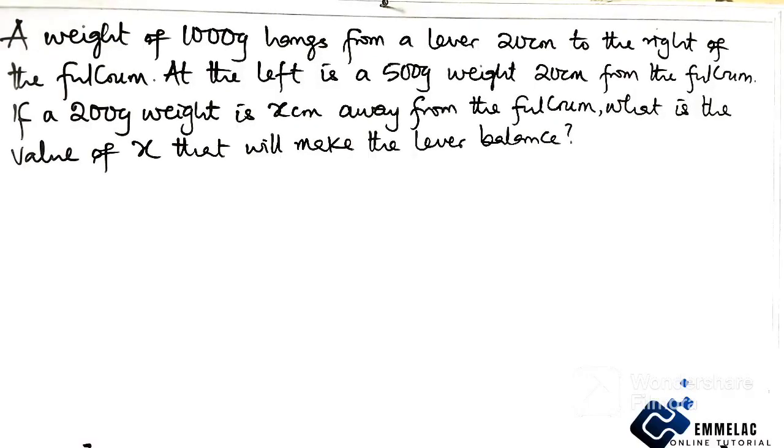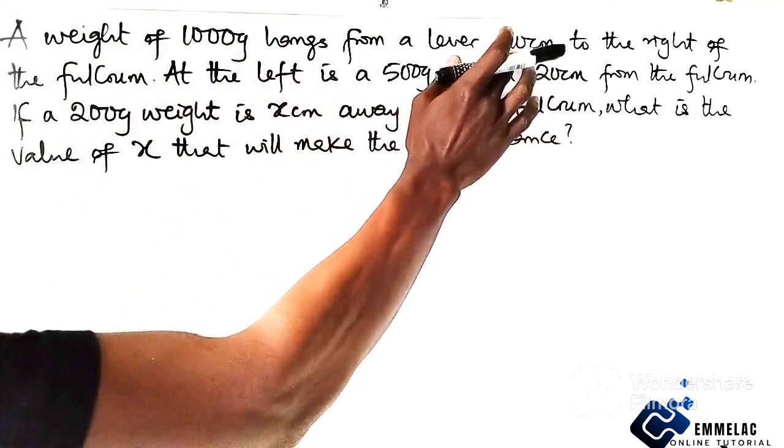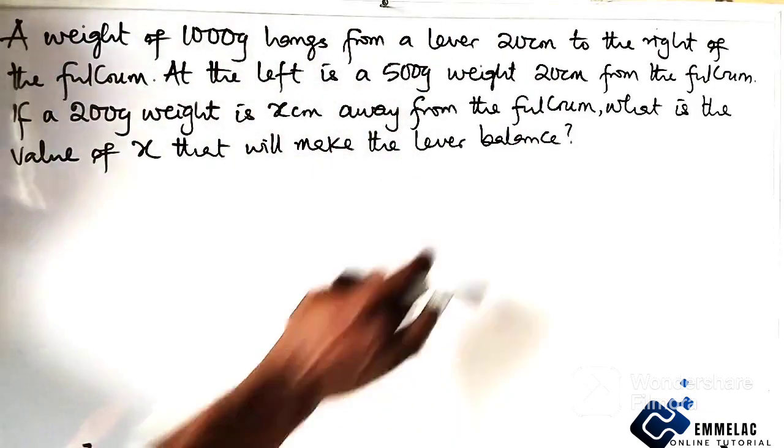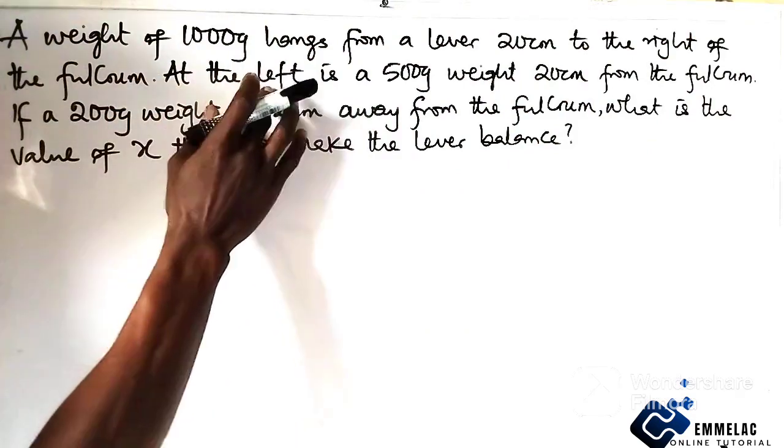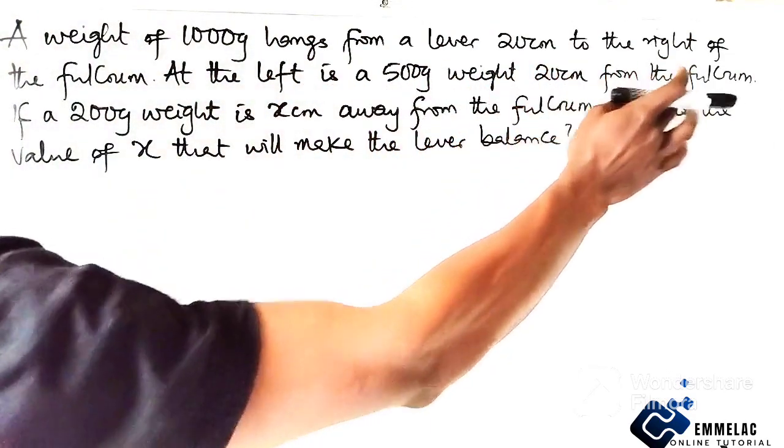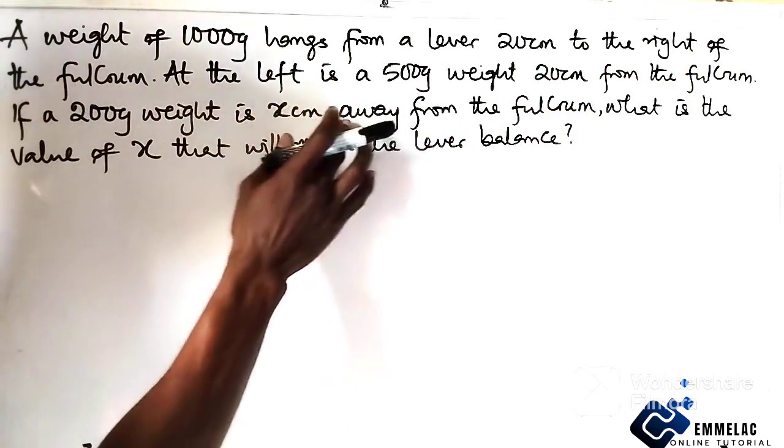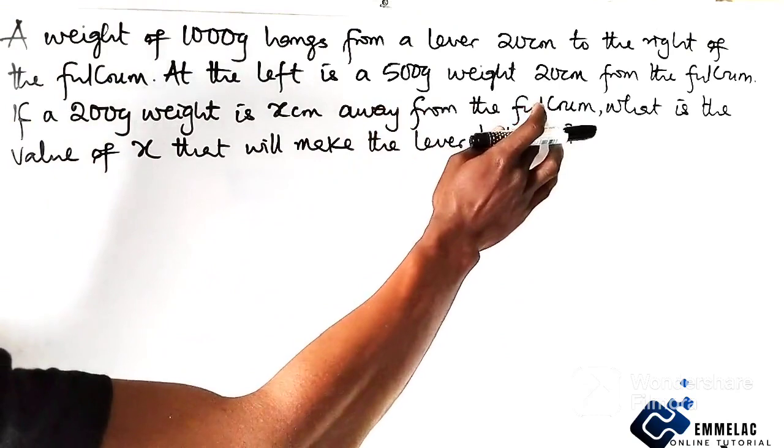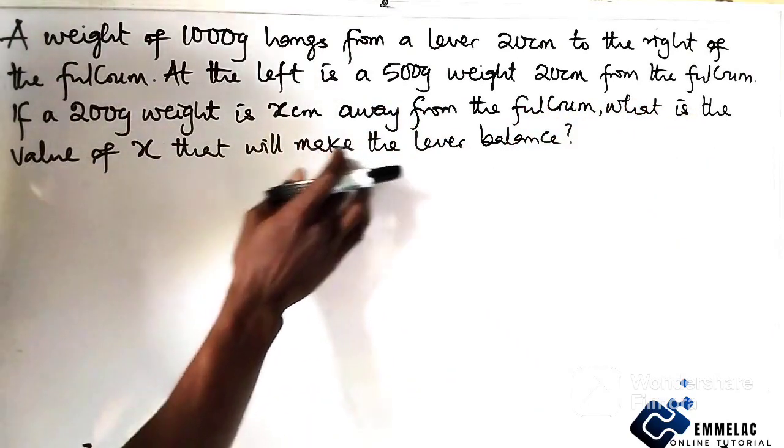Welcome to a MeLikeOnline tutorial. Before us is this question in physics equilibrium that says: a weight of 1000 grams hangs from a lever 20 centimeters to the right of the fulcrum. At the left is a 500 gram weight 20 centimeters from the fulcrum. If a 200 gram weight is x centimeters away from the fulcrum, what is the value of x that will make the lever balance?